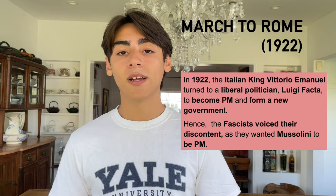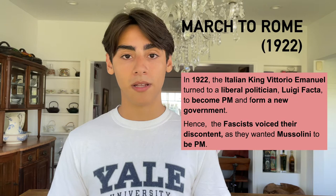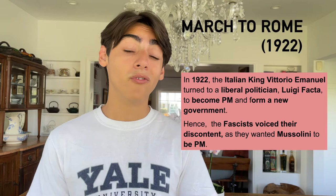Now let's look at the final event that allowed Mussolini to hold the premiership of Italy — the March on Rome in 1922. To give some context, in the beginning of 1922, the King of Italy, Vittorio Emanuele, who held the power of appointing the prime minister, appointed the liberal politician Luigi Facta to the position of prime minister. This naturally enraged all of the fascists across the country, as they voiced their discontent, wanting Mussolini to be prime minister instead, and this massively increased their already existing criticism of the monarchy.